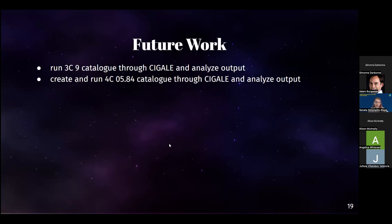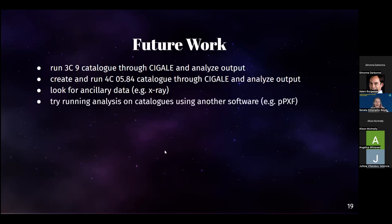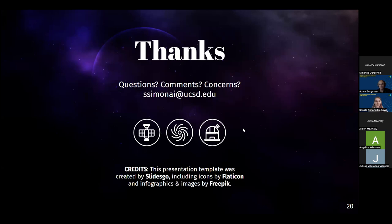Having finished first run-throughs of those, I'd like to look for ancillary data, such as from an instrument that collects x-ray data, since my existing photometric data is at visible or infrared wavelengths, and I'd be interested to see how these additional data points at the other end of the electromagnetic spectrum might affect my results. I'd also be interested in running my catalogs through an alternate stellar population modeling software, like PPXF. Because I don't yet know what my CIGALE results will look like, I'm hesitant to say anything about potential applications or implications of my work. Well, that's all I have for you today. Thank you so much for listening, and I think I can now take questions.